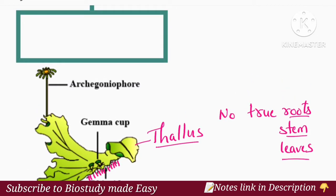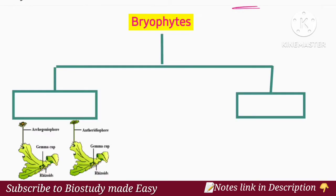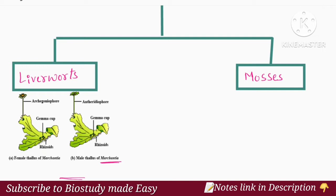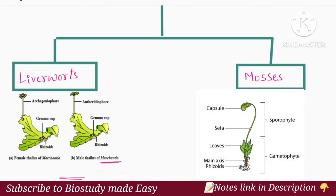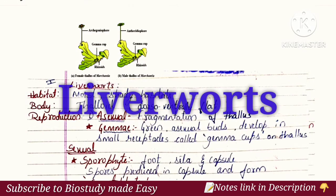Next, bryophytes are classified into two groups: liverworts and mosses. For mosses, the example is Funaria. You can see the structure of mosses here — this is Funaria. So this is the bryophyte classification.